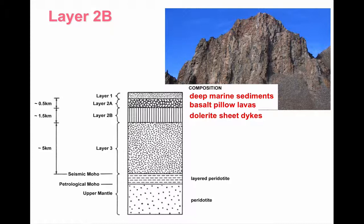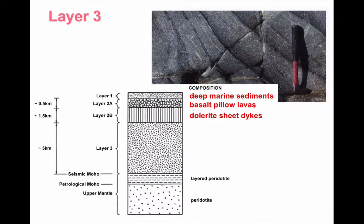Beneath layer 2b, the main bulk of the oceanic crust — layer 3 — is again mafic in composition. But because this is deeper, and perhaps represents the magma chambers that we'd find between oceanic constructive or divergent margins, this rock is gabbro. Near the bottom, it may well be layered as well, as shown in this photograph.